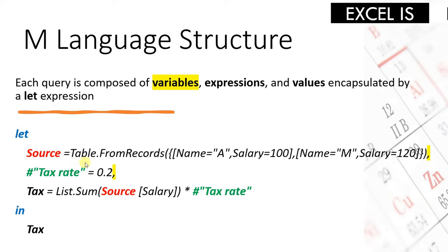The first step called 'source' holds an expression containing a function called Table.FromRecords. Don't worry about understanding the code right now — we'll come to this later. The second step is called 'tax rate', followed by an equal operator, and it carries a value of 0.2, a numerical value. The third step is a variable called 'tax', which calculates tax by applying a summation of a list and then applying the tax rate. After the 'in', you will see the variable that determines the final result of the query — in this case, the tax variable, which is the last variable inside the let statement.